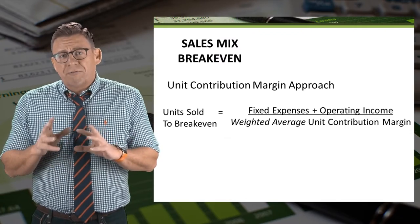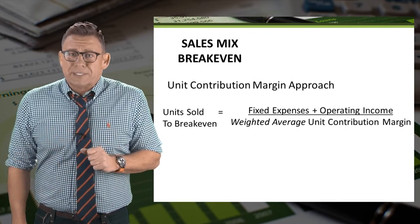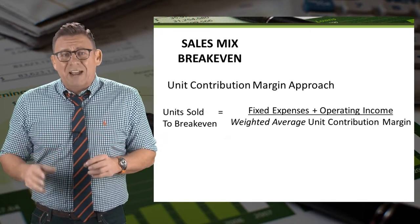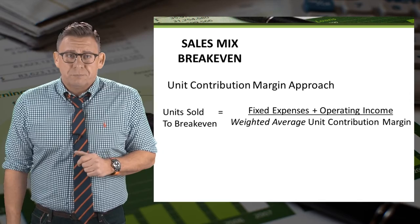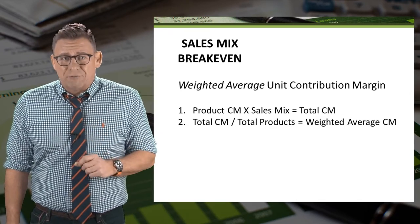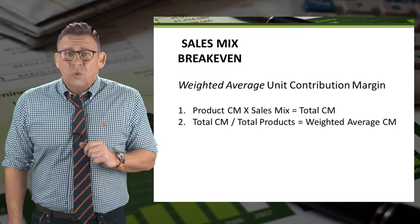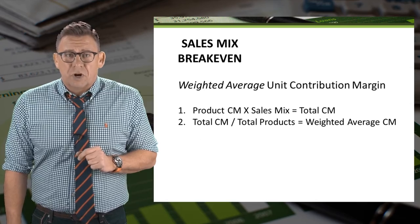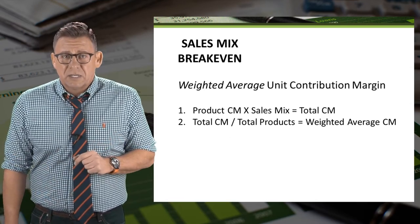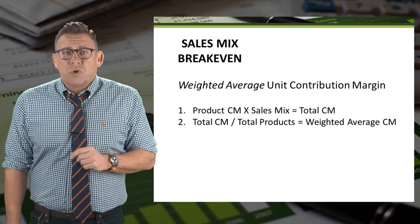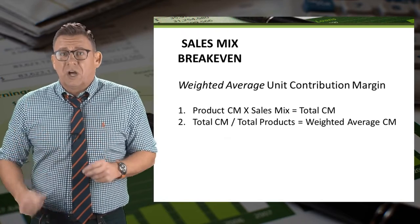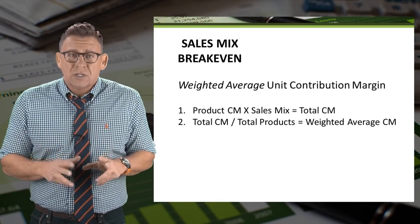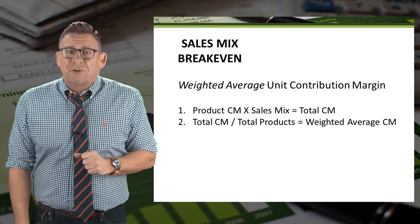In doing so, our formulas get tweaked a little bit. We will divide fixed costs plus operating income by the weighted average unit contribution margin. In order to figure out the weighted average unit contribution margin, we need to do a couple of steps. First, multiply the product contribution margin times the sales mix. Once we add all of these amounts up, we have the total unit contribution margin. Then divide that by the total number of products sold to equal the weighted average contribution margin.